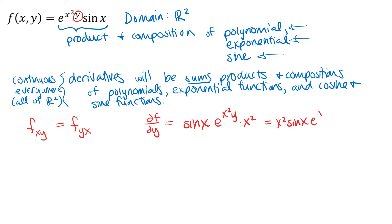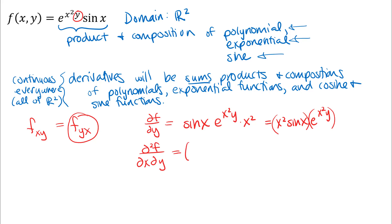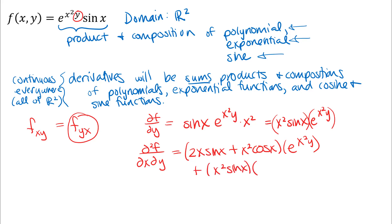Rearranging those terms, we now differentiate with respect to x to find the mixed second partial. Using the notation ∂/∂x applied to what we got from ∂/∂y — in subscript notation that's f_yx. This requires treating the expression as x²sin(x) times e^(x²y), so we have a double product rule here. Differentiating the first part with respect to x times e^(x²y), plus x²sin(x) times the derivative of e^(x²y) with respect to x, which gives e^(x²y) times 2xy by the chain rule.